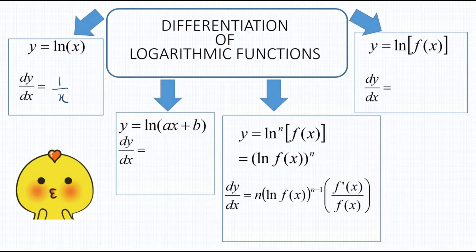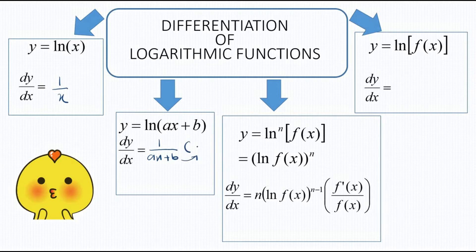The second rule: if we have ln(ax + p), the derivative would be 1 over what's inside the bracket — so ax + p — times the derivative of the inside. Differentiating ax + p gives a, so the result is a over ax + b. A hint: whenever you differentiate a log function, you will get a fraction as your final answer.